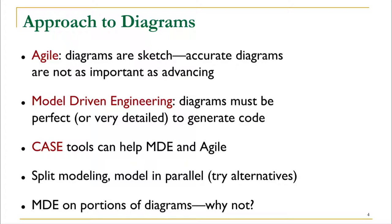Some other alternatives include split modeling, which means you can model and develop in parallel. One possible alternative is to follow agile but introduce model-driven engineering at certain portions. For example, a particular diagram or portion that is important can receive more detailed attention so that code generation is easier, while other parts can be handled in an agile manner. Combinations of both approaches are quite possible.